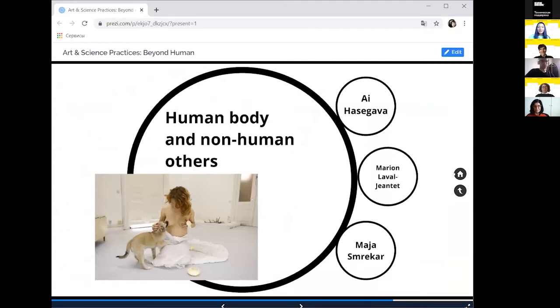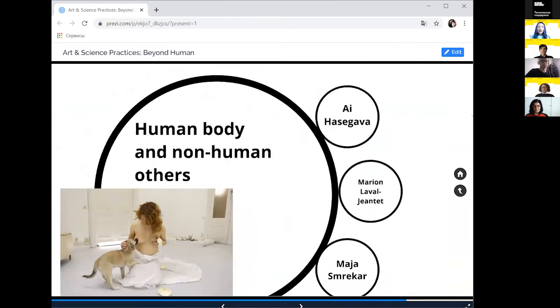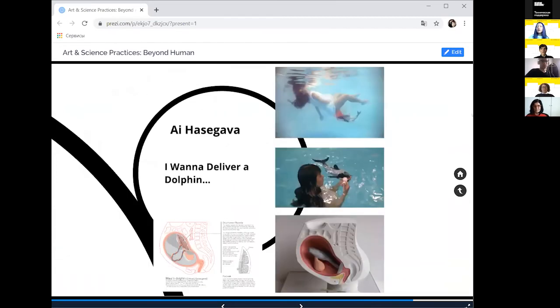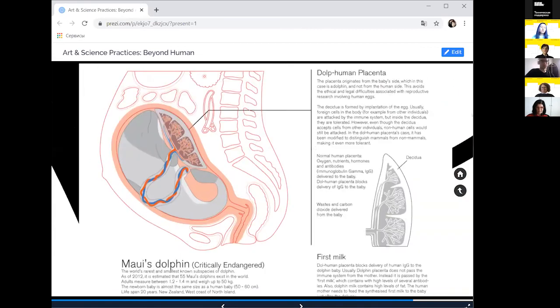Then I will present the first project by Ai Hasegawa, I Want to Deliver a Dolphin. This is also a speculative project. The artist is exploring how human body should be modified to be able to deliver a dolphin. This project can also be seen as a break in these boundaries between animal and human.